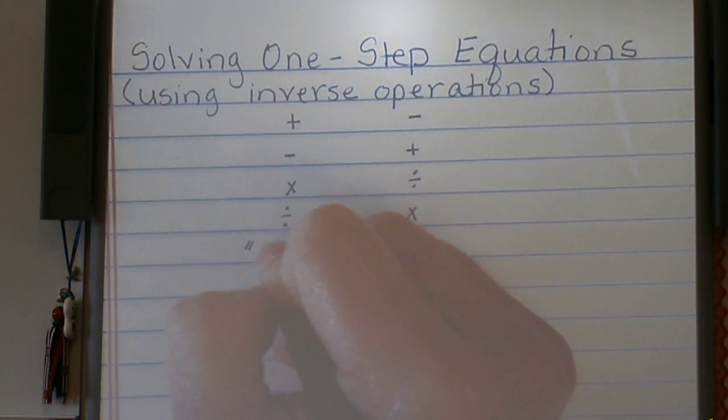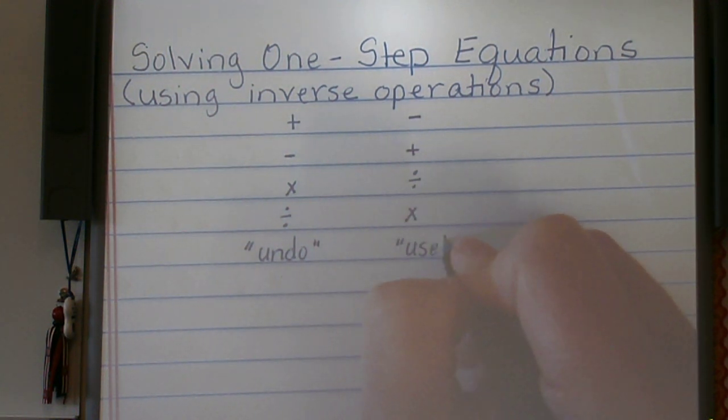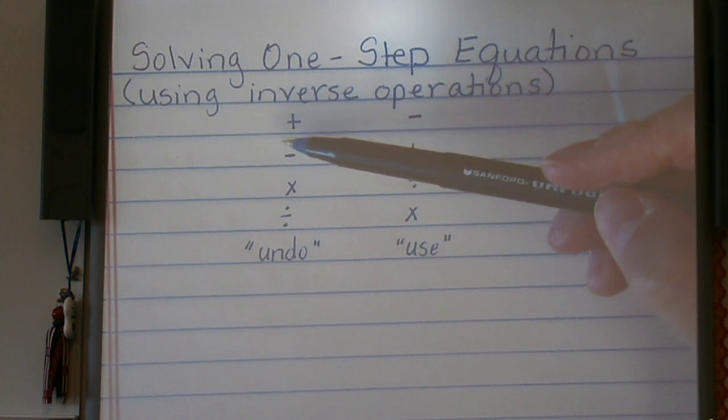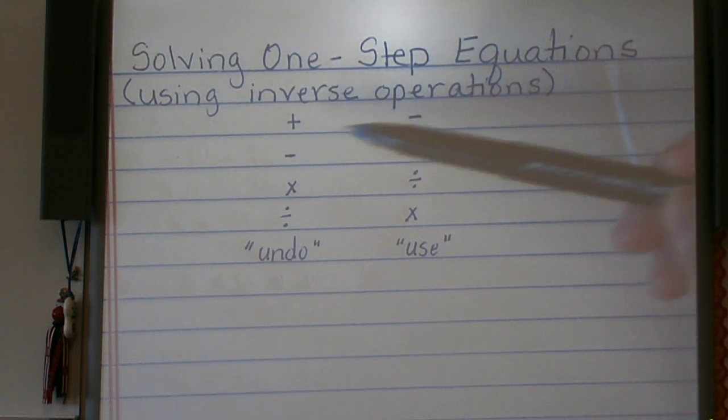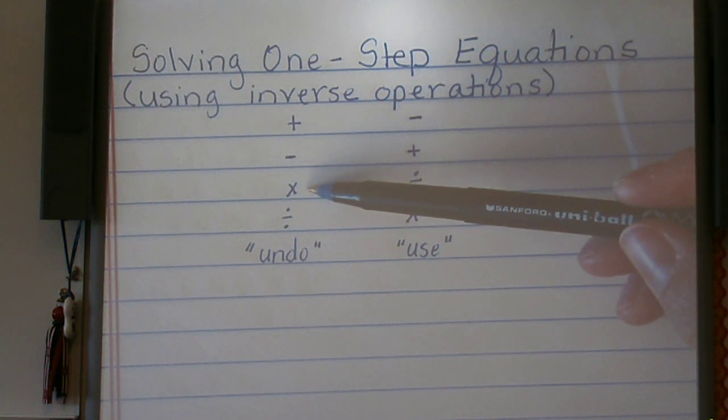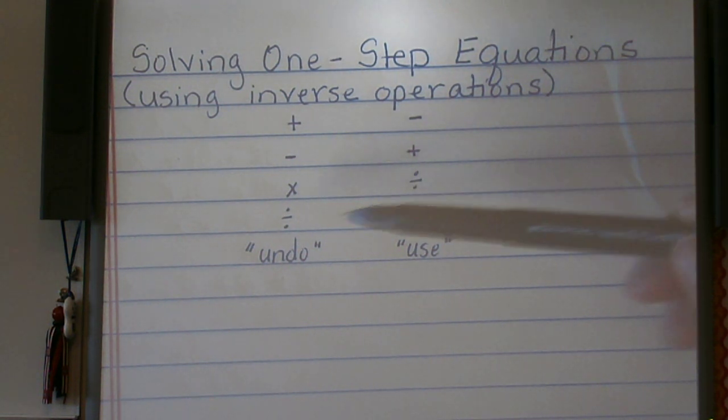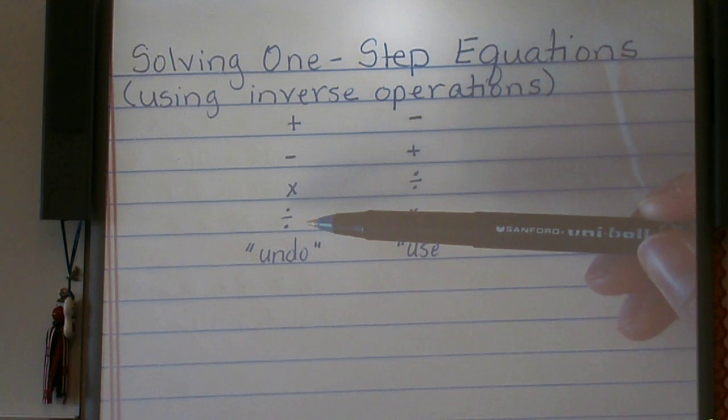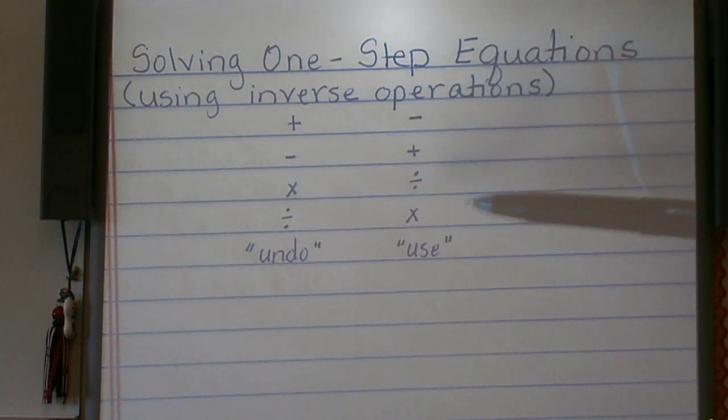So again, if we wanted to undo, this is what we use. If we want to undo addition, we subtract. If we want to undo subtraction, we add. If we want to undo multiplication, we divide. If we want to undo division, we multiply.